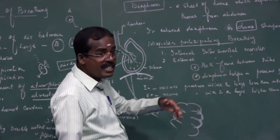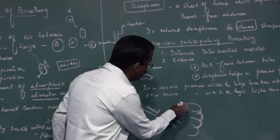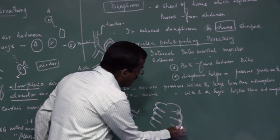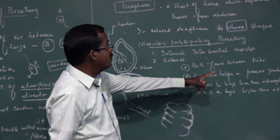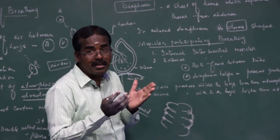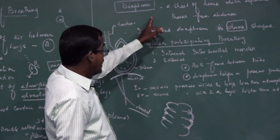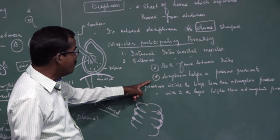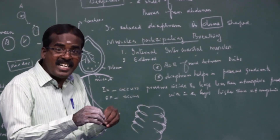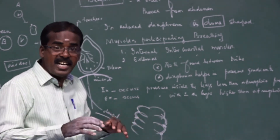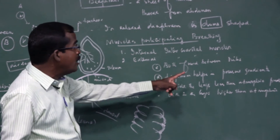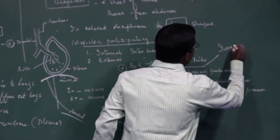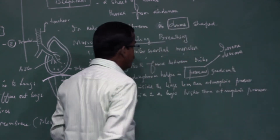Both intercostal muscles are found between the ribs. The major work of the diaphragm is to help in the pressure gradient — it can increase or decrease pressure. During inspiration, pressure inside the lungs is less than atmospheric pressure. During expiration, pressure within the lungs is higher than atmospheric pressure.